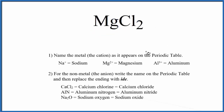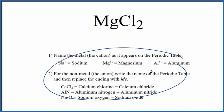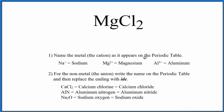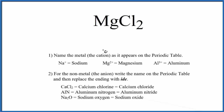Since it's binary, we can use these rules here to write the name for MgCl2. We'll first write the name for the metal, the Mg, just as it appears on the periodic table. So Mg — that's magnesium.